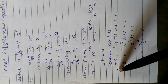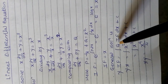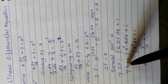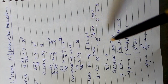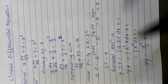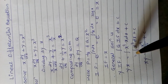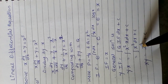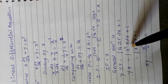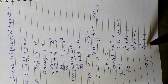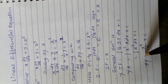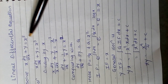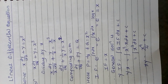The general solution formula is y times IF equals the integration of Q times IF with respect to x, plus c. Therefore y times x equals the integral of x squared times x dx, which is the integral of x cubed dx. Using the power rule x raised to n integrates to x raised to n+1 divided by n+1, with n equals 3 we get x raised to 4 divided by 4. The final answer is xy equals x⁴/4 plus c.